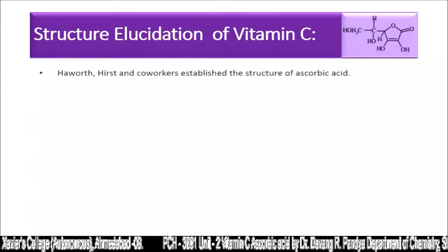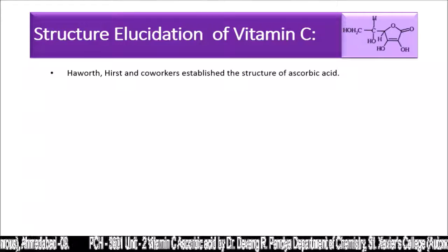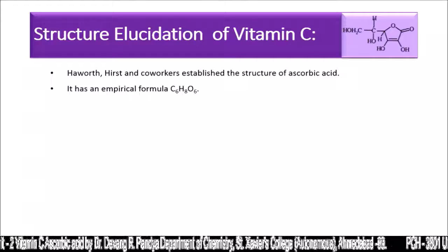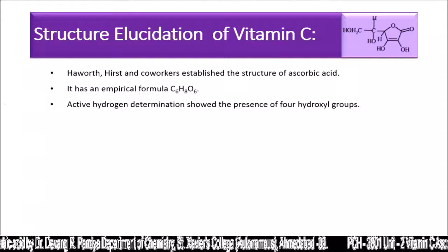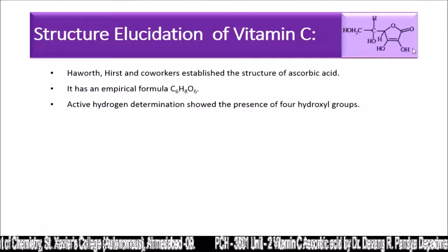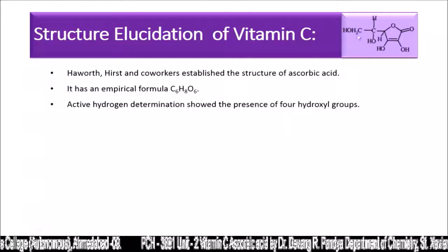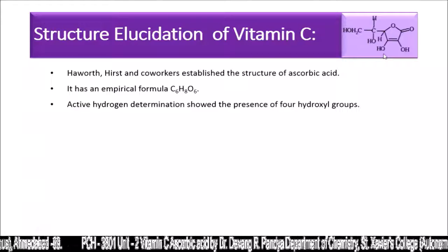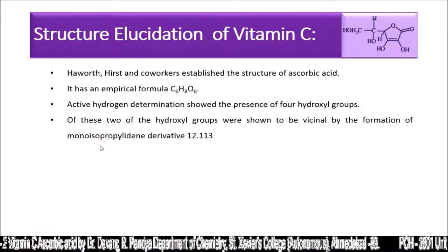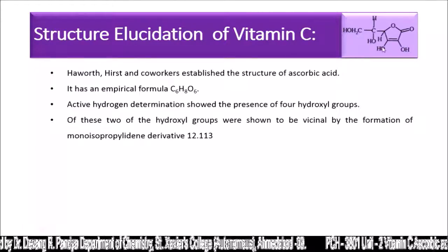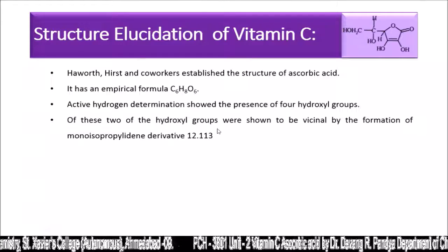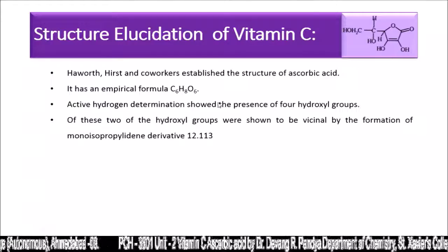Structural elucidation of vitamin C: Howarth, Haworth, and co-workers established the structure of ascorbic acid. It has the empirical formula C6H8O6. Active hydrogen determination showed the presence of four hydroxyl groups. Of these, two hydroxyl groups were shown to be vicinal by the formation of a monoisopropylidene derivative. So ascorbic acid contains two hydroxyl groups in a vicinal position, identified by treating with acetone in the presence of a proton to get the monoisopropylidene derivative.